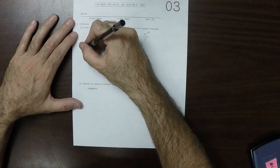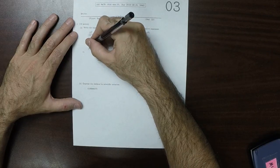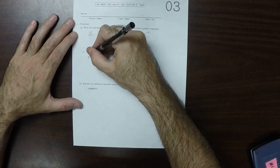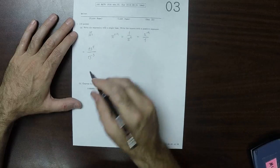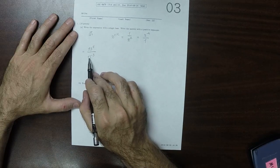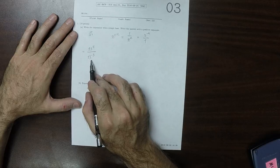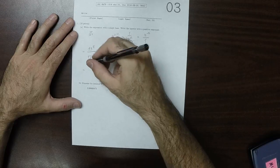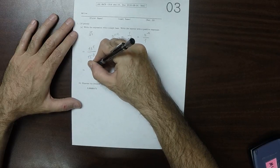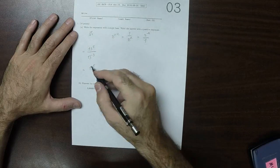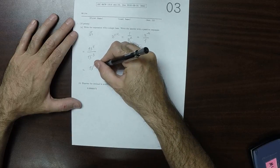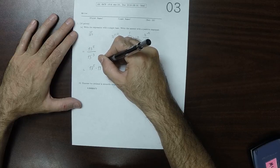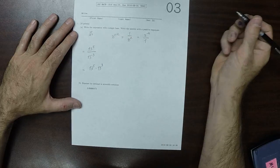So taking this expression, 13 to 5 divided by 13 to negative 3, what we want to do is we want to move this 13 to negative 3 up to the numerator. And moving it up to the numerator changes the sign of its exponent so that this 13 to 5 is still 13 to 5. And then now that 13 to negative 3 when written in the numerator is 13 to positive 3.